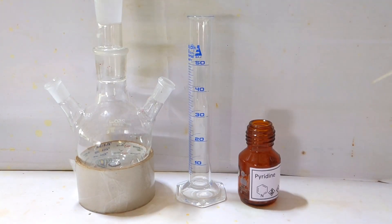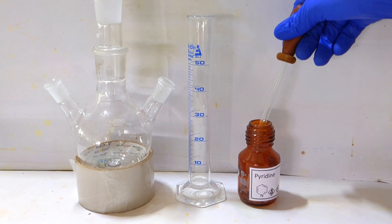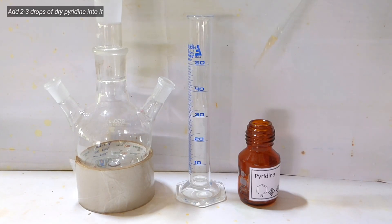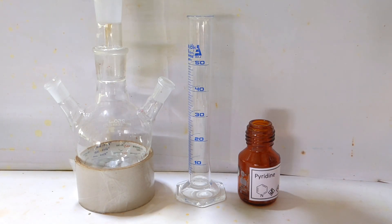Now I add 1 to 2 drops of pyridine using a glass dropper. This was synthesized a few days back by the decarboxylation of niacin, and I have done a video on that you can check out. Pyridine is a halogen carrier; you can also substitute that with iron powder, around 1 gram.